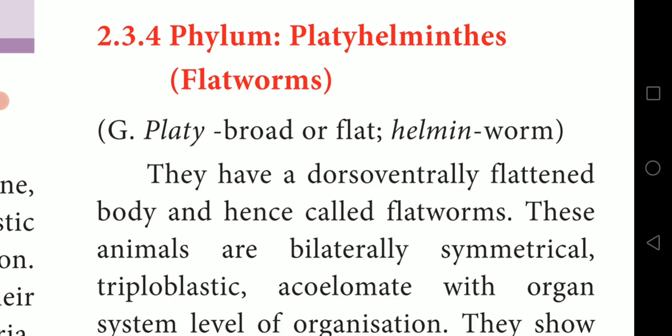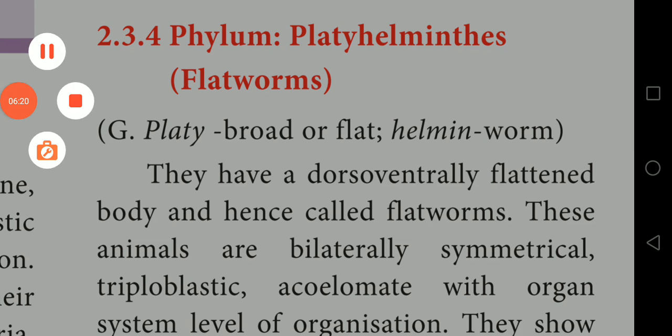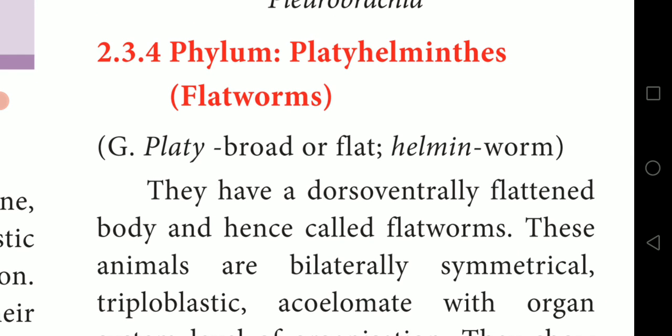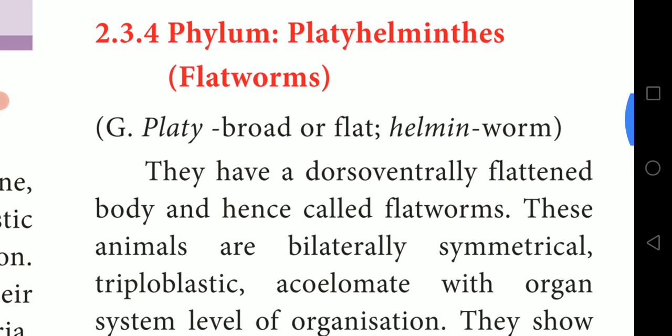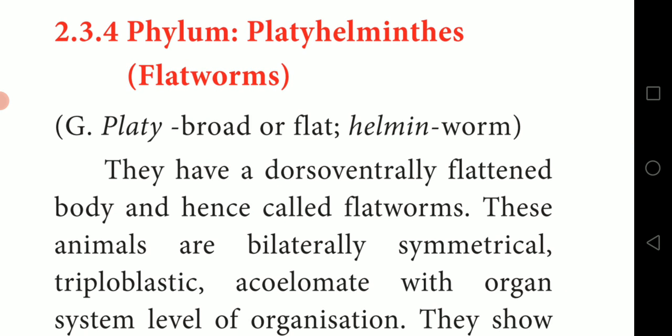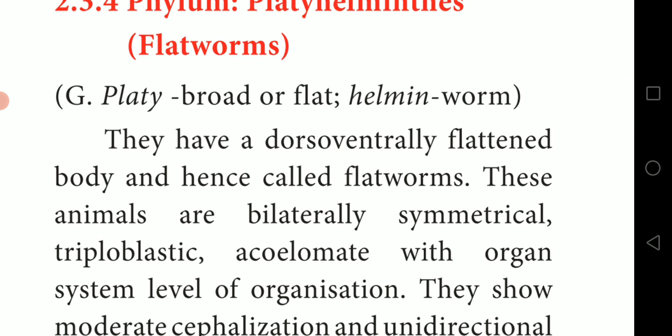Phylum Platyhelminthes is also called flatworms. It is a Greek word: 'platy' means broad or flat, 'helmin' means worms. The flatworms have a dorsoventrally flattened body — their dorsal side and ventral side are very flattened, which is why they are called flatworms. These animals are bilaterally symmetrical.